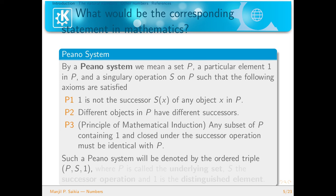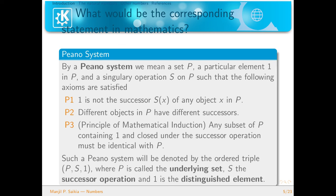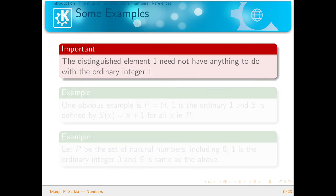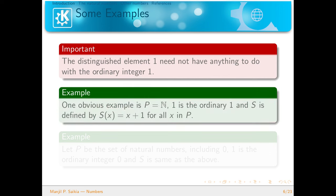These are the three axioms for a Peano system, and the system will be denoted by the triple (P, S, 1), where P is the underlying set, S is the successor operation, and 1 is the distinguished element. Importantly, the distinguished element 1 has nothing to do with the ordinary integer 1. In some cases it may coincide — for example, one obvious example for P is the set of natural numbers, where 1 is the ordinary 1 and S is defined by S(x) = x + 1 for all x in P.